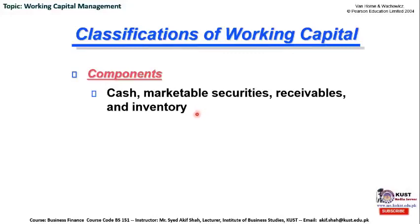If we write them in order of liquidity, then cash needs to be written first, then marketable securities, which is also a current asset. When a company invests its idle funds into the securities or shares of another company, that investment is known as marketable securities investment. The holder of marketable securities can sell out their shares at any time without delay, so this asset can be transformed into cash at market price very quickly.